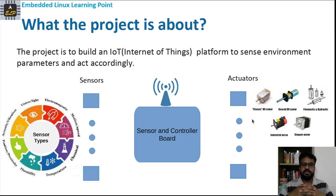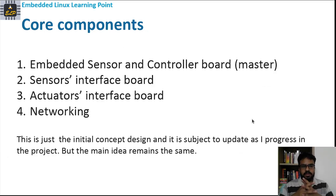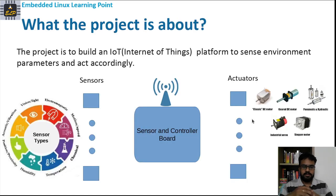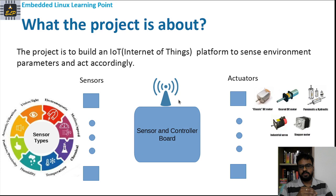The idea of this project is to build this platform for our future projects. The first core component is the Embedded Sensor and Controller Board, which we can also call the master board. This sensor controller board typically interfaces both the sensors and actuators and shall be capable of connecting to the internet. It is a network-capable device, which is basically the idea of Internet of Things. We should be able to control things from your mobile phone — that's where the network comes into picture.